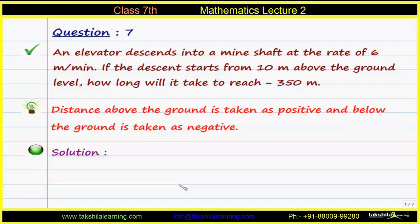Let us do question number seven. In question number seven, we have an elevator that descends into a mine shaft at the rate of six meters per minute. If the descent starts from 10 meters above the ground level, how long will it take to reach minus 350 meters?